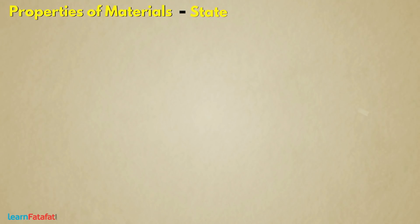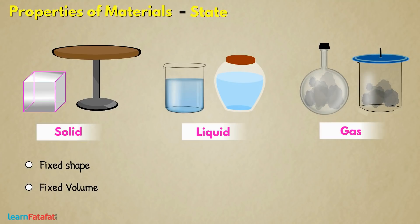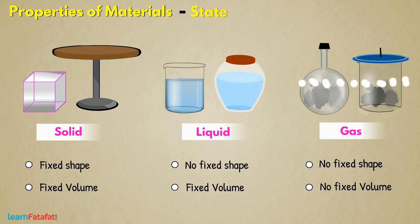State. Basically, materials exist in three states: solid, liquid and gas. Those which have fixed shape and volume are solids. Those which have fixed volume but do not have fixed shape are liquids. And those which neither have fixed shape nor fixed volume are gases.